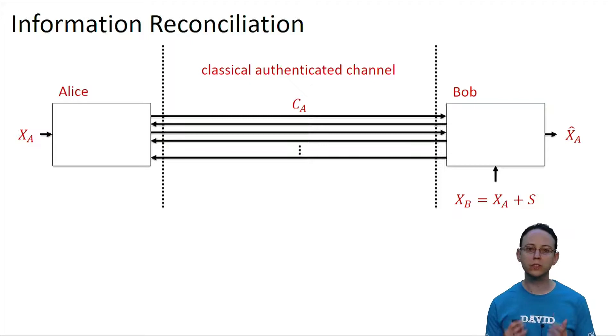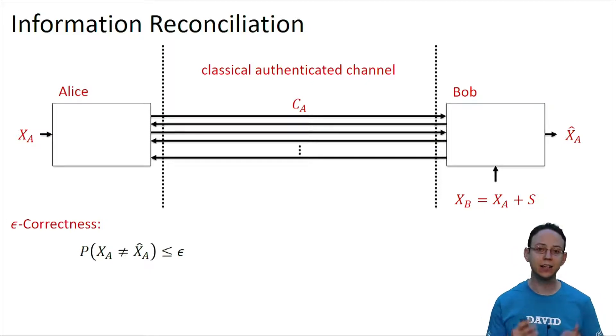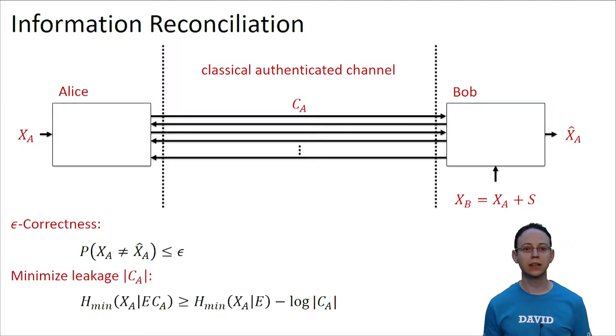Now what are the goals of the information reconciliation step? They are twofold. First, and most obvious, Alice and Bob want to ensure that after reconciliation the strings xa and xa hat are epsilon correct, that is, that the probability that they are different is at most epsilon. And second, they want to minimize the length of the communications over the classical channel. The reason is, as we saw previously, that they reduce our bound on the minimum entropy.